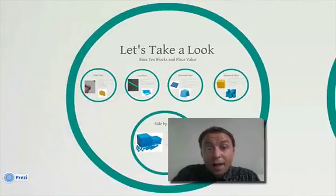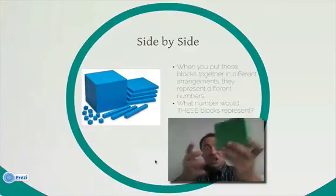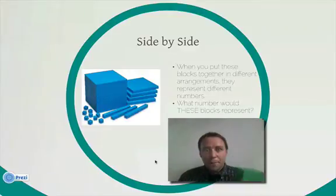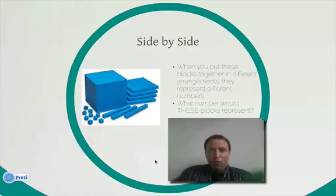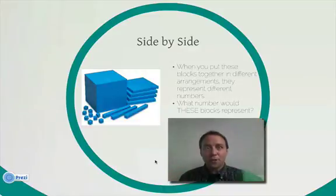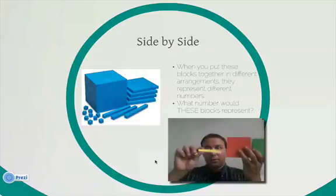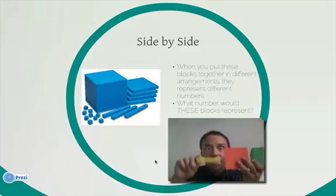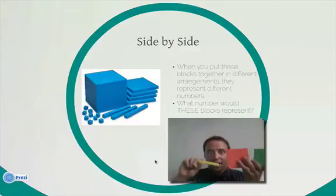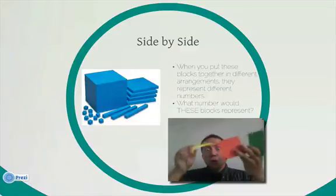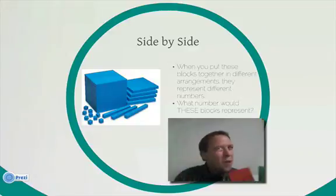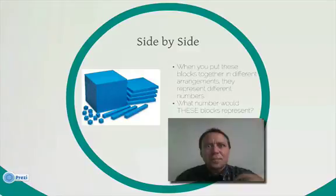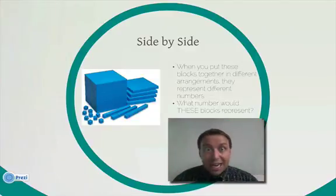We're going to give names to all of our place values later, but I just wanted to show you these side by side. When you put these side by side, they become numbers. If we just had one of each of these, we would have 1,000 and 100 and 10 plus 1 is 11 — 1,111 if we put these together. Using these manipulatives is going to help you get a good picture of what you're doing. I think using these for big number addition and big number subtraction when you're carrying and borrowing is really helpful.